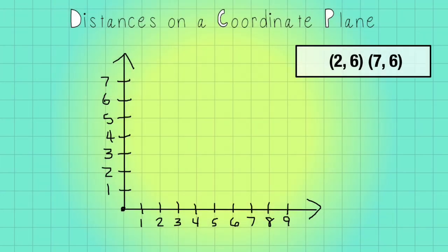Now let's look at how to find distances on a coordinate plane. First thing we have to do is plot this point. So I'm gonna go over two and up six and plot the first one, and then I'm gonna go over seven and up six and I'm gonna plot this one.